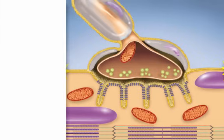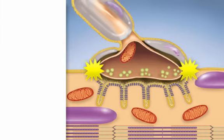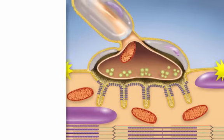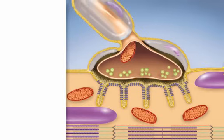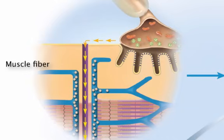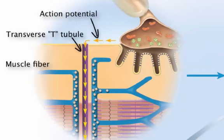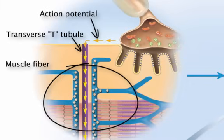First, a wave of action potential spreads from the motor end plate in all directions. This is similar to the ripples formed on a pond when a stone is thrown. When this wave of excitation reaches the transverse tubules, which are commonly known as T-tubules, it continues down them into the sarcoplasm of the muscle fiber.